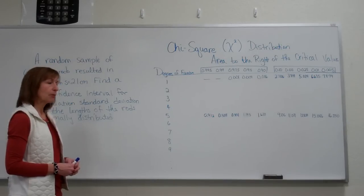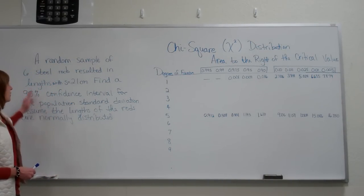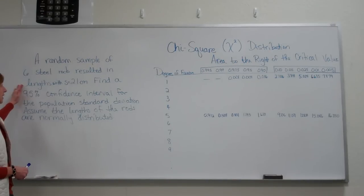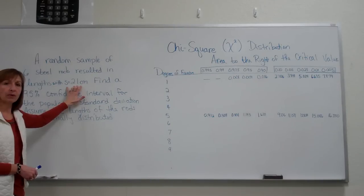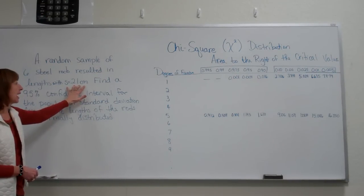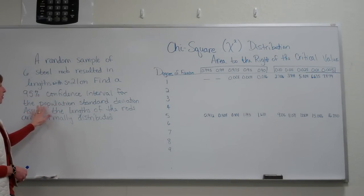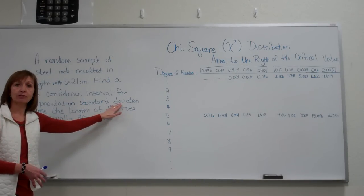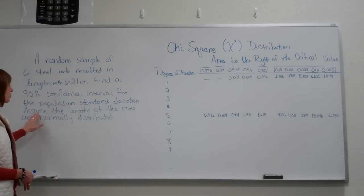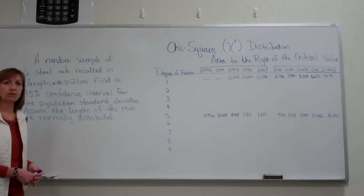Here's the question about the confidence interval: a random sample of six steel rods resulted in lengths with s equal to 2.1 centimeters. Remember, s is the notation for the sample standard deviation. The problem says find a 95% confidence interval for the population standard deviation — we want to find a confidence interval for sigma — and we assume that the lengths of the rods are normally distributed, which allows us to use the chi-square distribution.